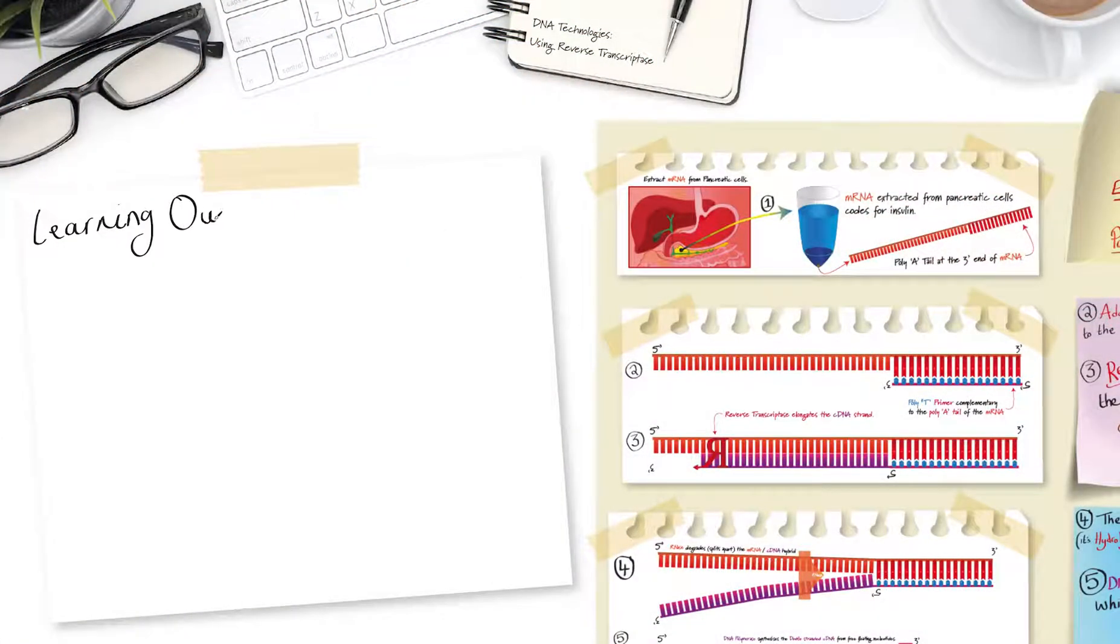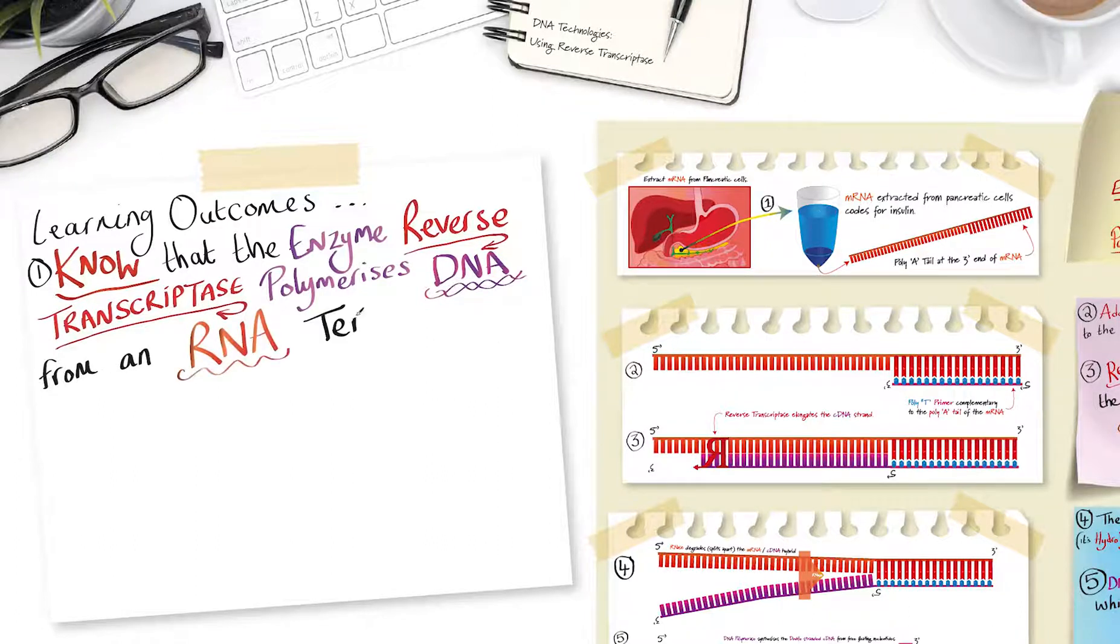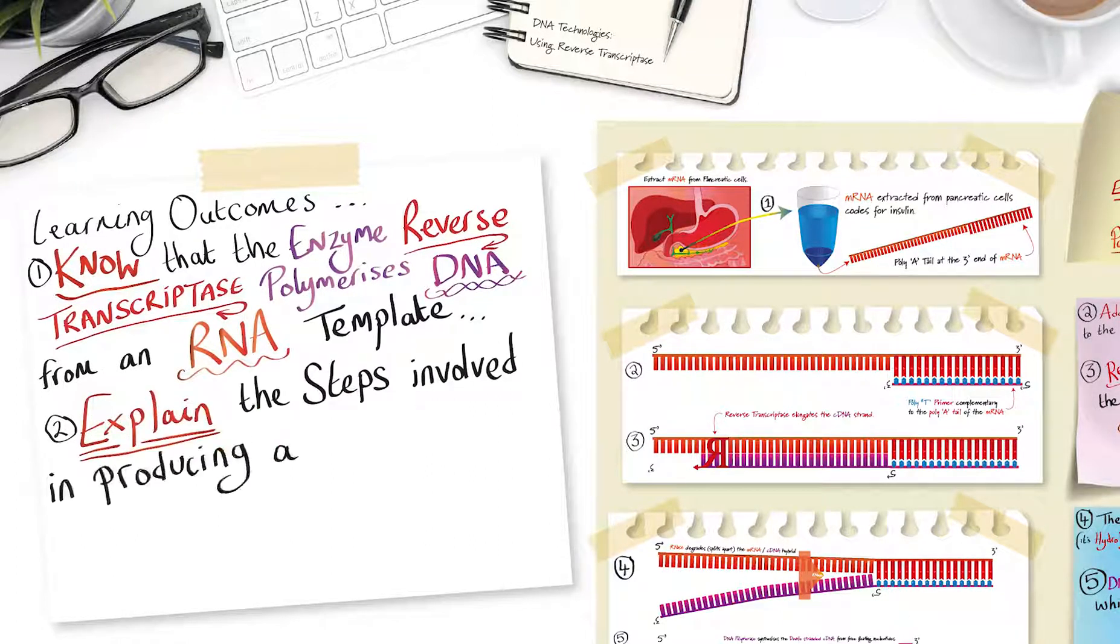Your learning outcomes are number one, know that the enzyme reverse transcriptase polymerizes DNA from an RNA template. Number two, explain the steps involved in producing a complementary DNA clone from a messenger RNA strand of interest.